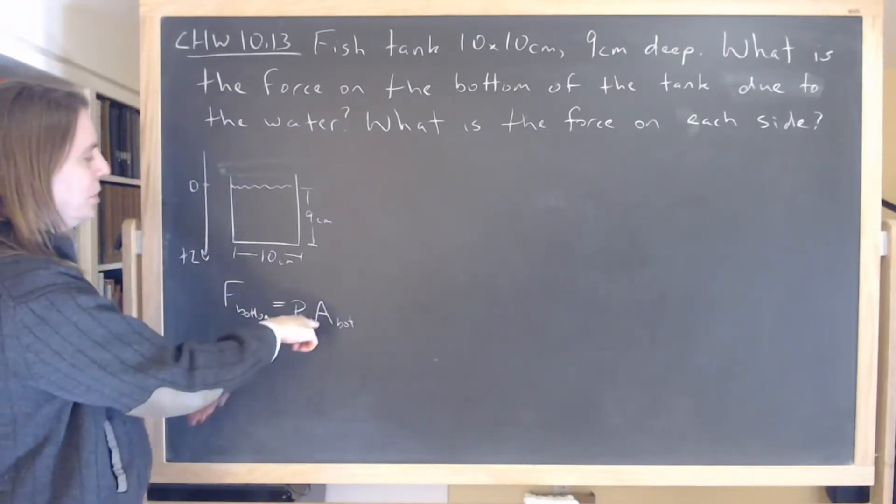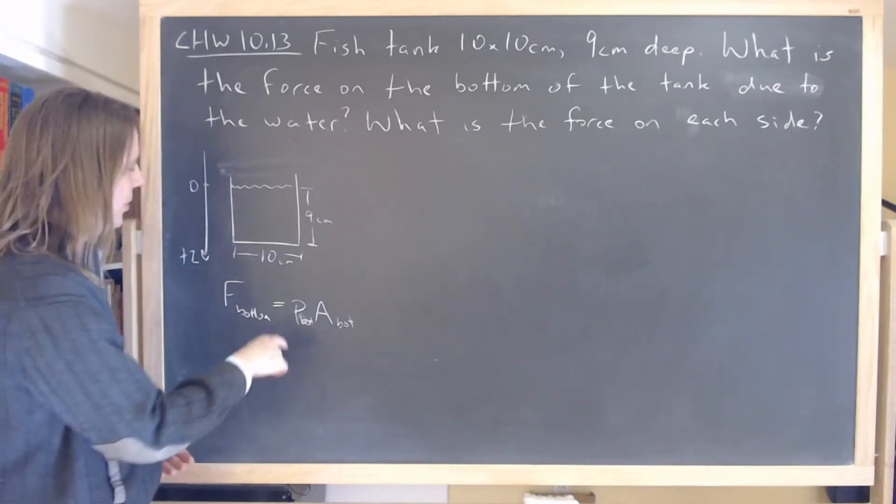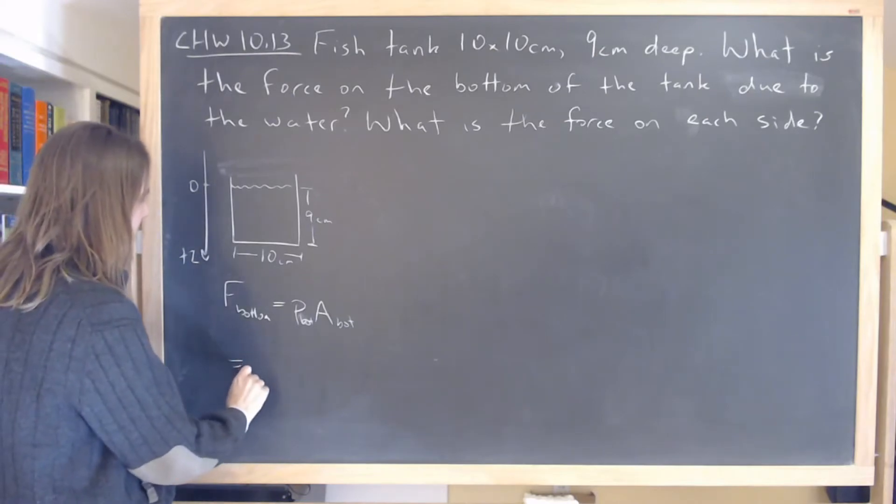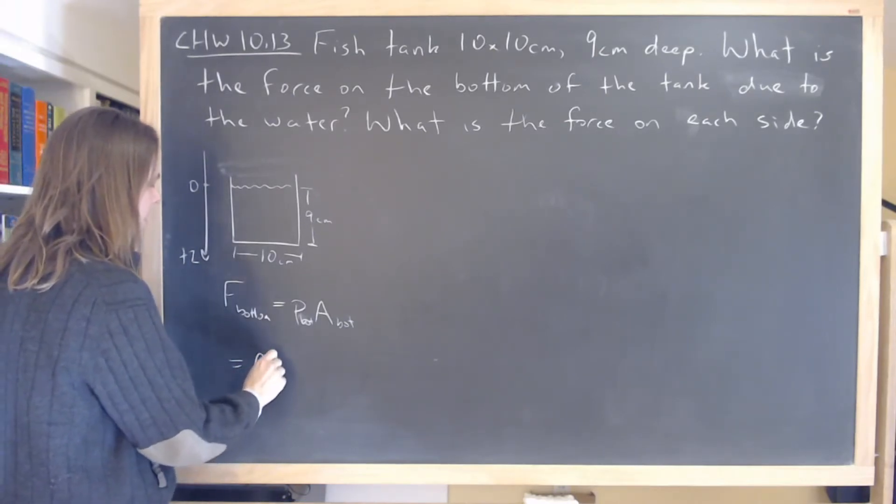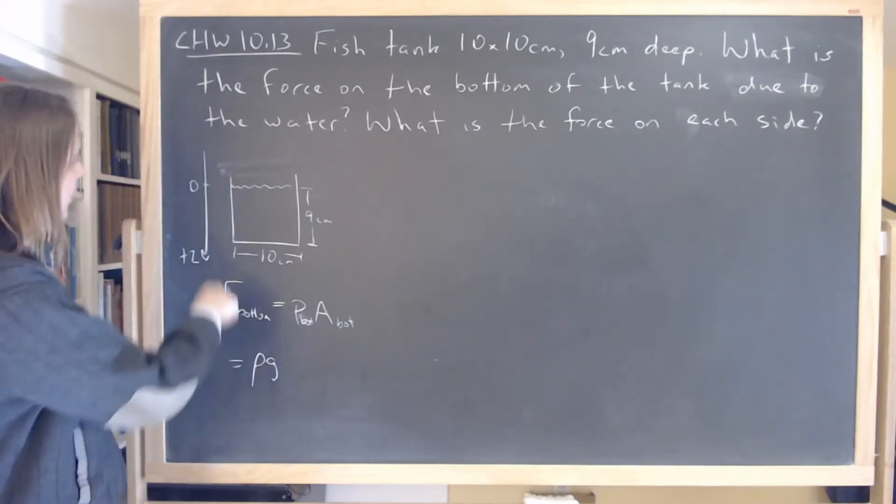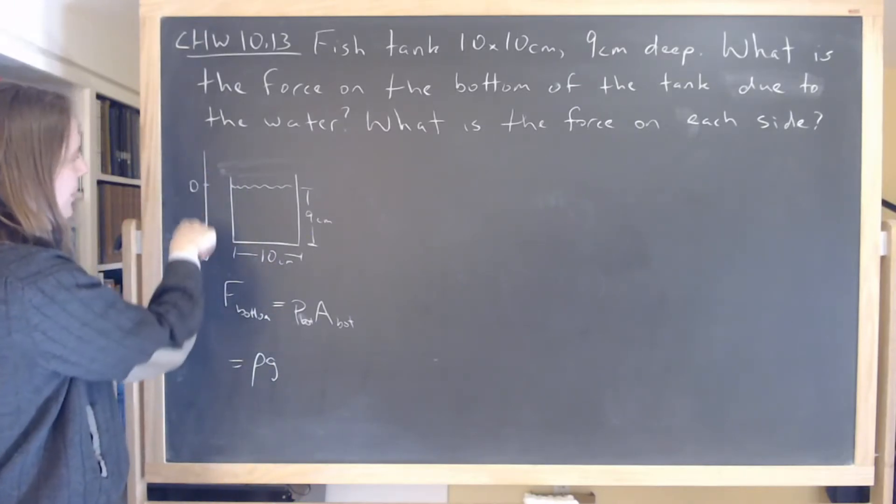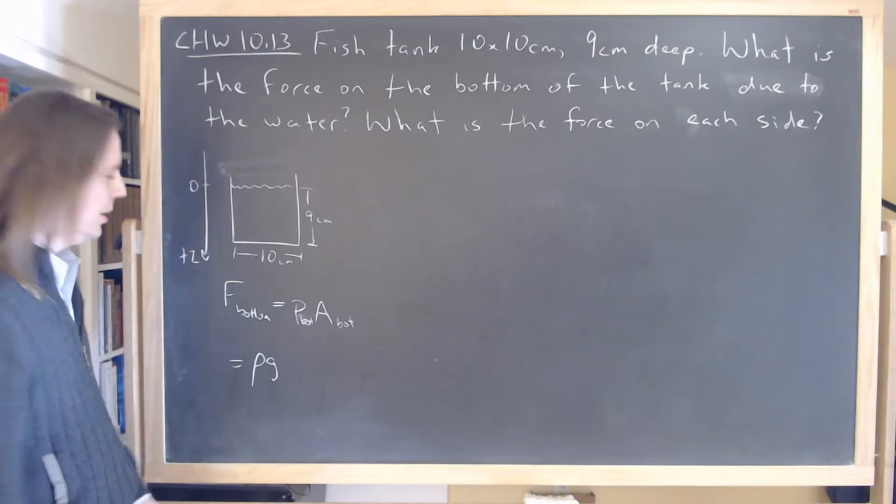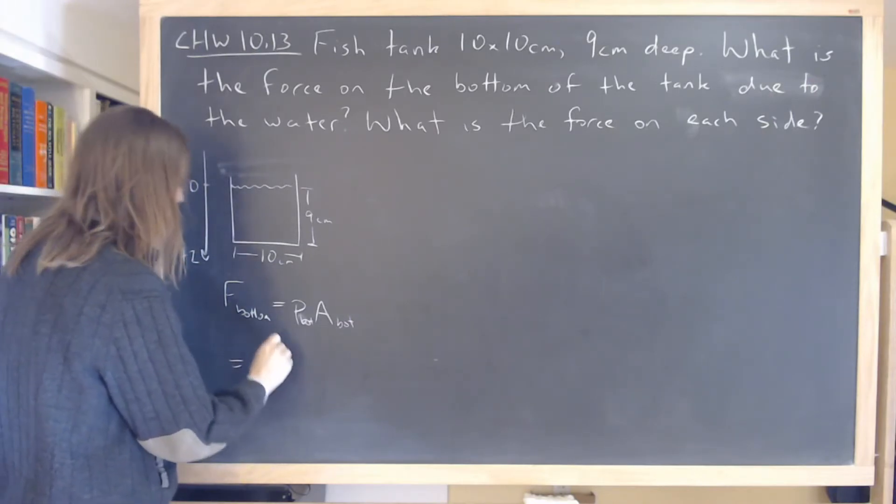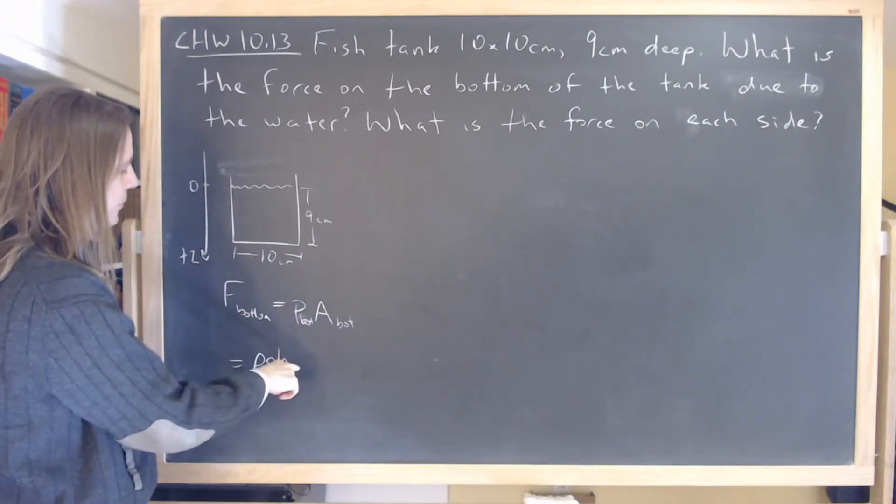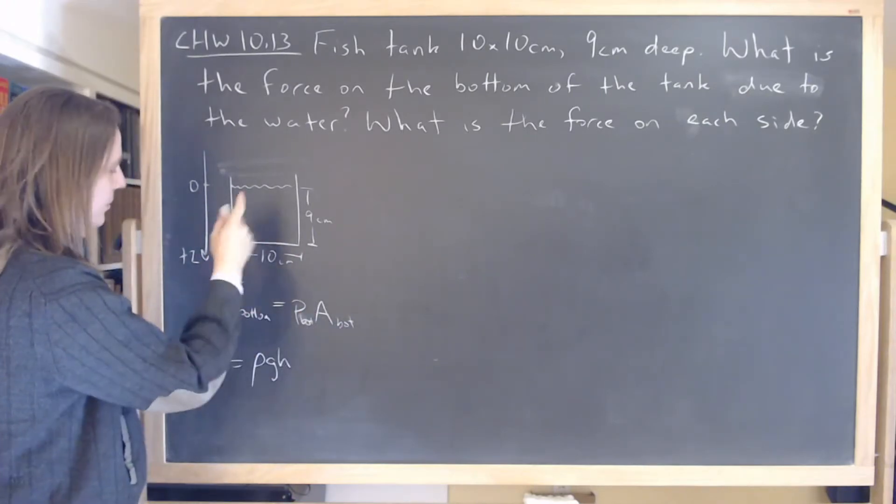So that area we know is just 10 centimeters by 10 centimeters. The pressure we can get from the hydrostatic pressure calculation. We can say it's the density of water times g gravitational acceleration times d or depth or height, how far down you go. So times let's call that h, how tall the water is. So that's the pressure down there. And then the area is just the area.